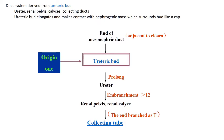Regarding the development of the permanent kidney, there are two important origins. The first one is the ureteric bud. The ureteric bud is the end of the mesonephric duct, and from it develops the ureter, renal pelvis, renal calyx, and collecting duct tubules.